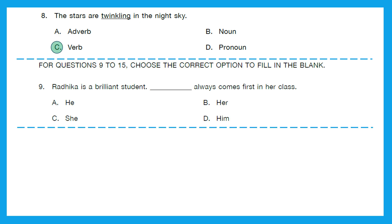For questions 9 to 15, choose the correct option to fill in the blank. Question 9: 'Radhika is a brilliant student. Dash always comes first in her class.' The right pronoun should be 'she' — she always comes first in her class. Option C is the right answer.